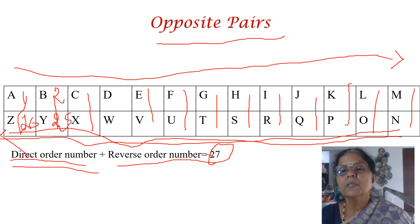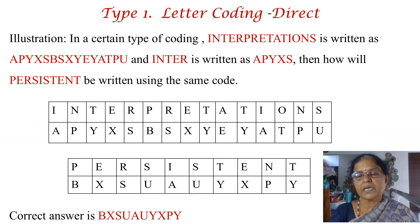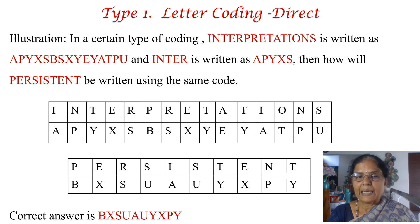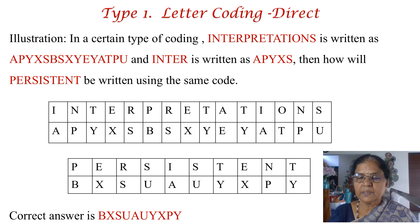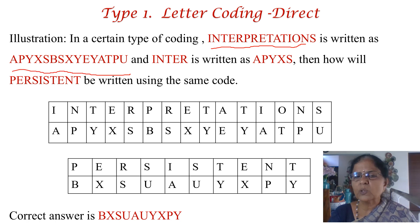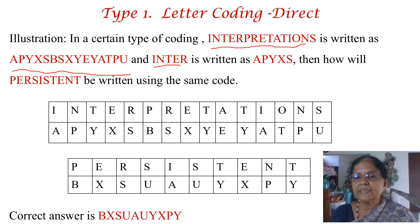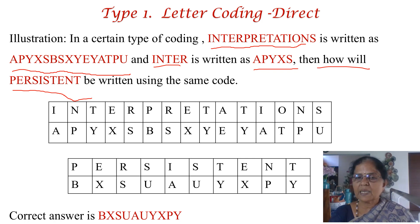Now for the first type of question, which is very direct. The question goes like this: in a certain type of coding, the word 'interpretations' is written as APYXSBSXYEPA, and the word 'inter' is written as APYXS. Then how will the word 'persistent' be written using the same type of coding?